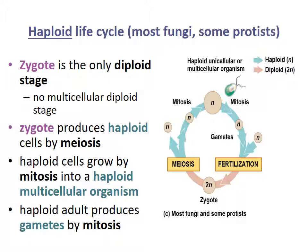Fungi have another unique life cycle — a haploid life cycle where the majority of their body tissue is haploid, but they have a diploid zygote during sexual reproduction. The zygote is the only diploid stage; there's no multicellular diploid stage. The zygote produces haploid cells by meiosis, and those haploid cells grow by mitosis into the haploid multicellular organism. The haploid adults then produce gametes by mitosis since they're already haploid cells.